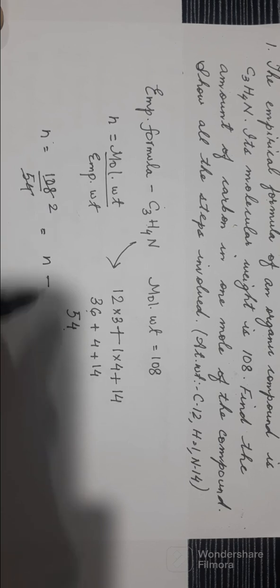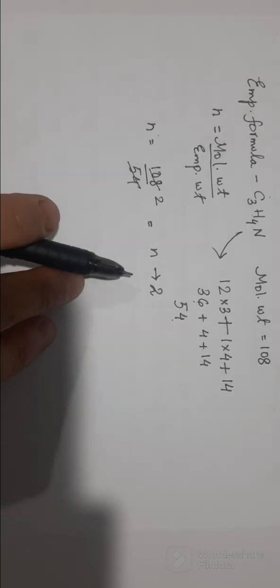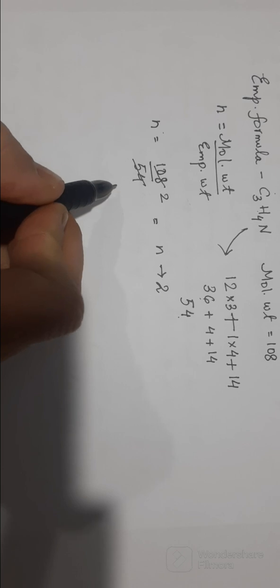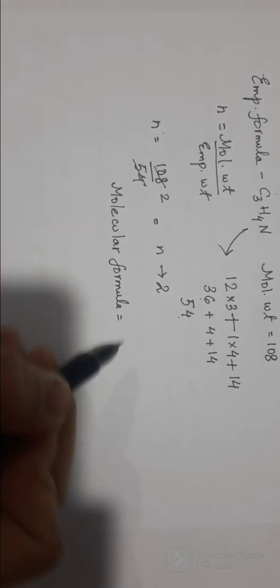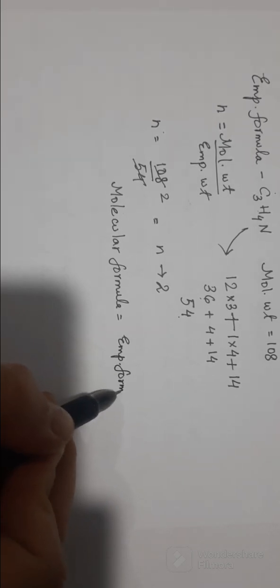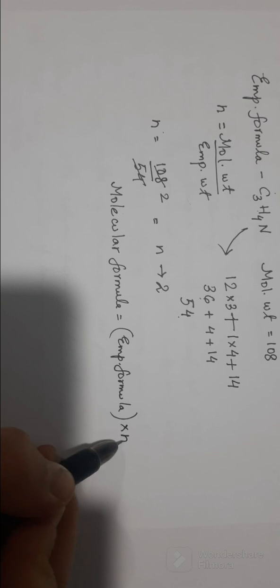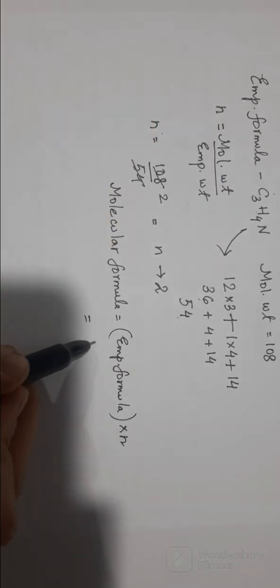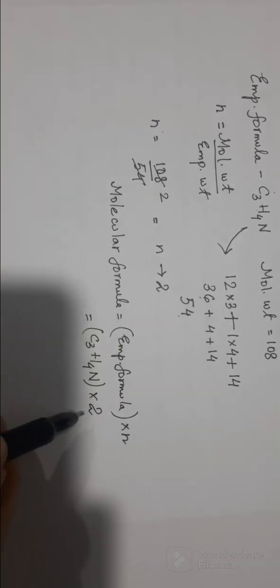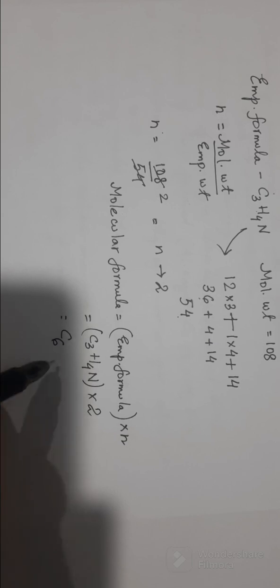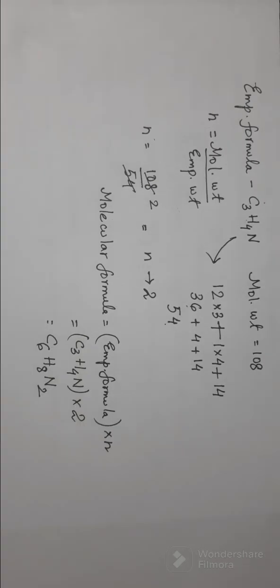Now we put in the values: molecular weight is 108, empirical weight is 54. So n = 108 / 54 = 2. With n equals 2, we find the molecular formula by multiplying the empirical formula by n: C₃H₄N × 2 gives C₆H₈N₂.